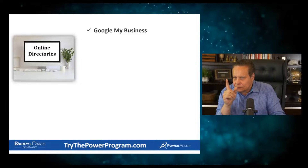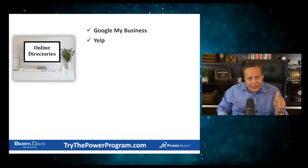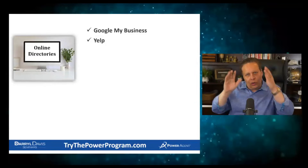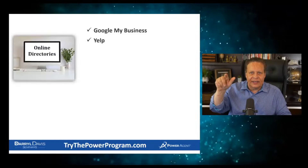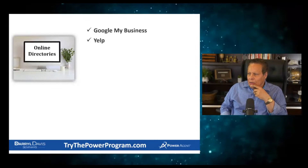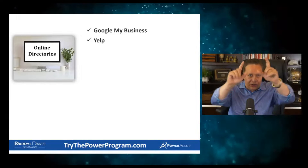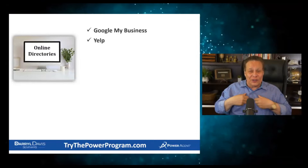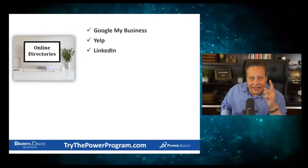Number five is online directories. You've got Google My Business, Yelp, LinkedIn — check your profile. Power agents, we had Jennifer Darling do a whole training session on how to write bios — it was beautiful. Look for her in the classroom by typing 'Jennifer.' Also: Homes.com, Facebook business page, Yellow Pages, Better Business Bureau, local directories like your church bulletin. Let me tell you about church bulletins — my mother, may she rest in peace, would look at the church bulletin and see an ad for an electrician and say, 'You should call him because he's in the church bulletin — you know he's honest.' People think that way. Advertising in a church bulletin is not expensive at all.